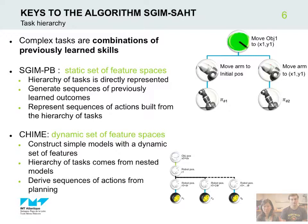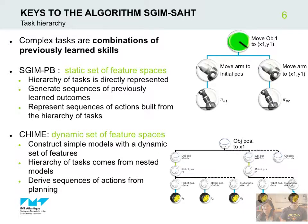This idea can also be applied to higher-level tasks. For instance, if it needs to move the blue object from position X0 to X1, it can infer intermediate positions of the object, and from inferred robot positions, it can infer intermediate motor commands.